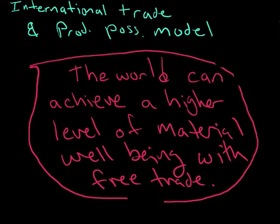It's simply this: the world can achieve a higher level of material well-being with free trade. Let's think about material well-being. That means if you have a world where countries don't trade with each other, America makes all its goods and China makes all its goods, the world can produce this much stuff, this little pink circle here.